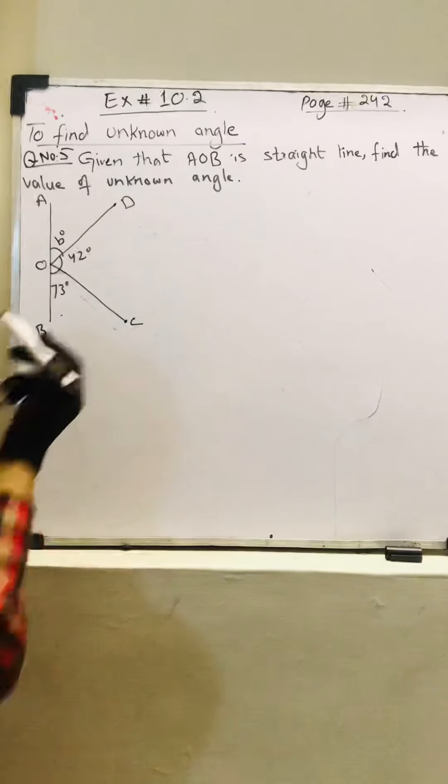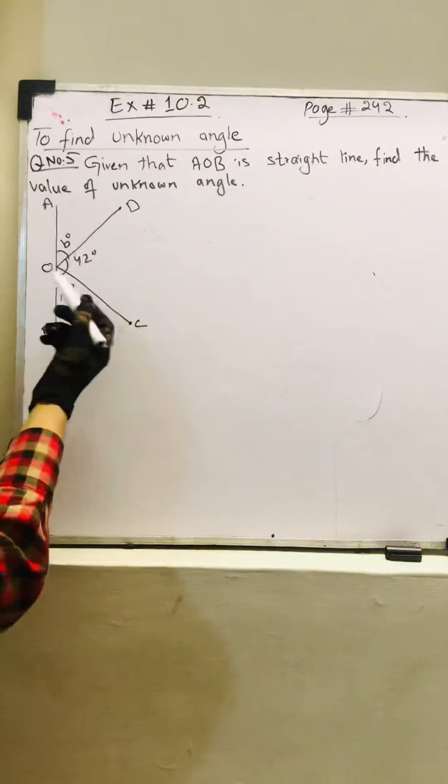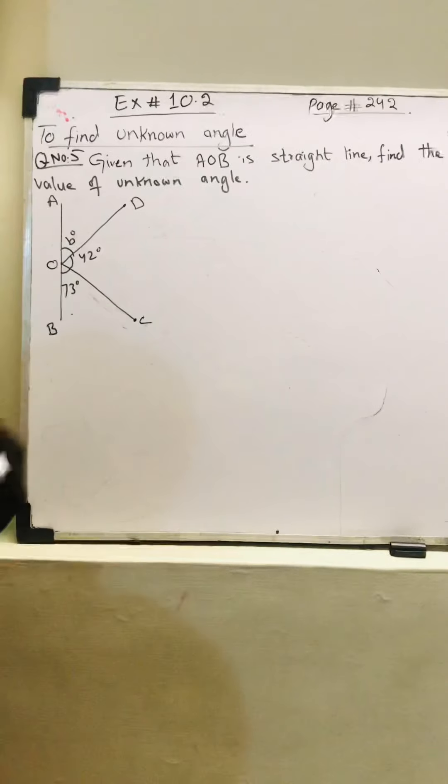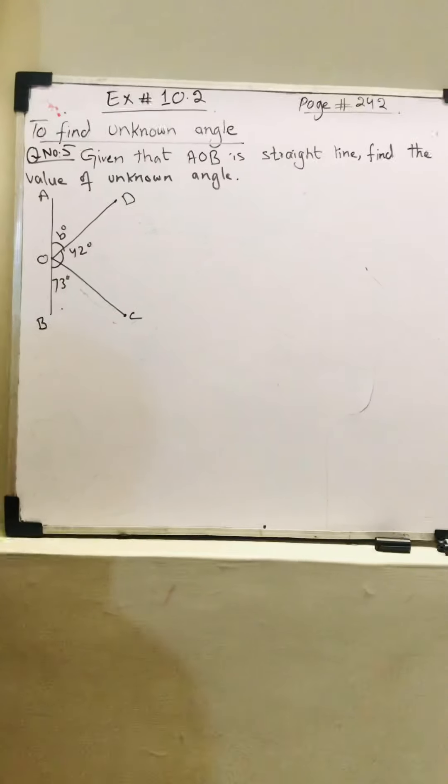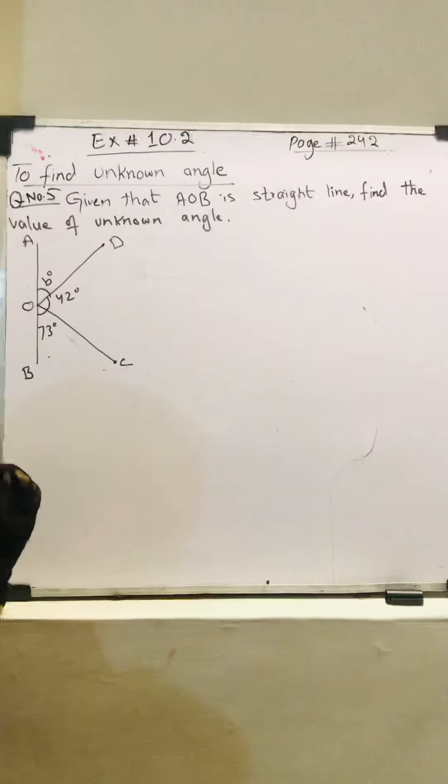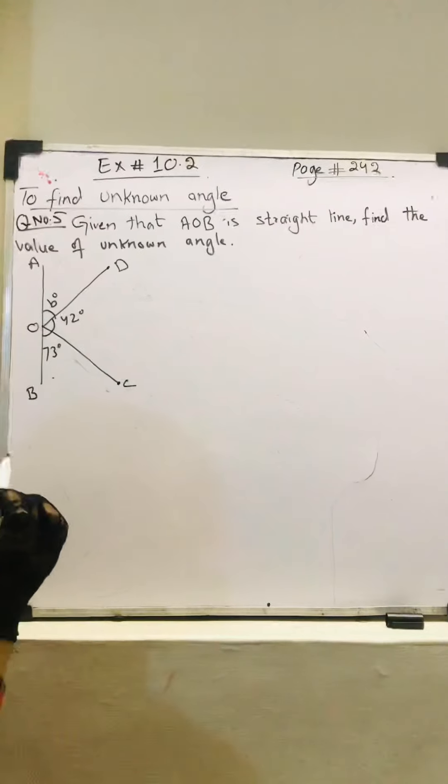AOB is a straight line. Three adjacent angles are forming here: angle AOD, DOC, and COB. Remember students, adjacent angles always have a common vertex, share a common side, and all angles lie on the opposite side of the common side.